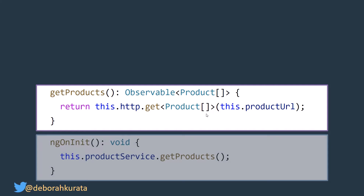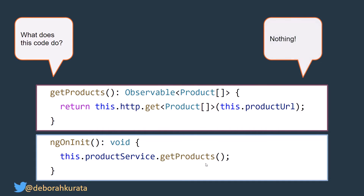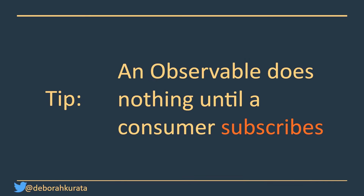In the component, we go ahead and call that method. So, question: what does this code do? It does absolutely nothing. Why does it do nothing? Because an observable does not do anything until a consumer subscribes.